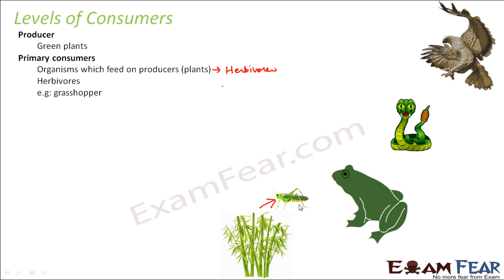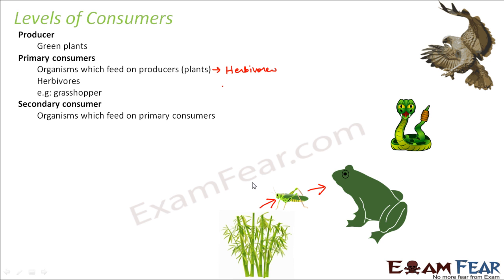An example of a primary consumer would be the grasshopper. So here you can see these are the producers, then you have the grasshopper which is a herbivore. The next is the secondary consumer — those organisms which feed on primary consumers — and this is a carnivore. Carnivores can be primary or secondary carnivores depending upon which organism they are feeding upon. In this case, the frog feeds upon the herbivore, so the frog is a primary carnivore.